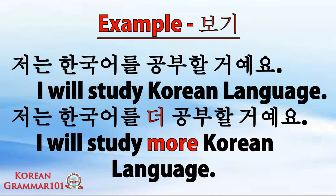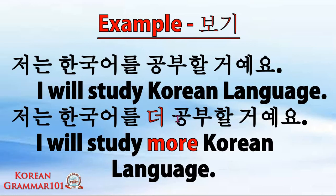Let's continue with an example using a verb. Jeonun hangogurul kumbuhal goyeo — 'jeonun' means I, 'hangogurul' means Korean language, and 'kumbuhal goyeo' comes from 'kumbuhada', meaning to study, in future tense — 'will study'. This is the positive form. If we put the word 더 (do) before our verb, it becomes: jeonun hangogurul do kumbuhal goyeo — I will study more Korean language.